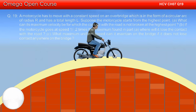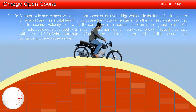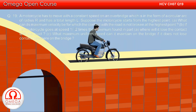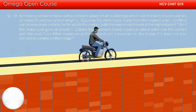A motorcycle has to move with a constant speed on an overbridge which is in the form of a circular arc of radius R and has total length L. Suppose the motorcycle starts from the highest point. Part A: What can its maximum velocity be for which the contact with the road is not broken at the highest point?